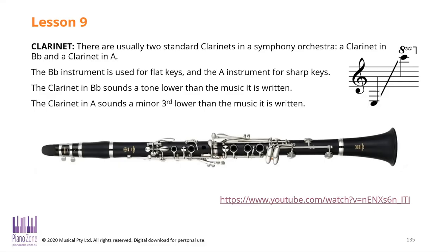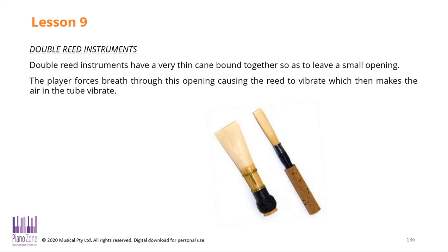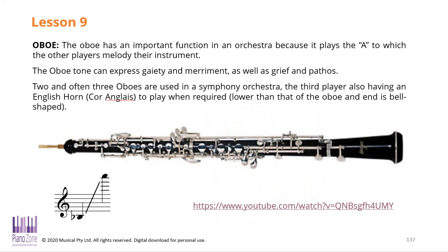I really encourage you to go and watch each of these videos — they're not particularly long, at most 10–15 minutes, but they'll give you a lot of really good information. A double reed instrument has a very thin cane bound on both sides, leaving a very small opening at the top. You have to have really thin lips and quite strong lung capacity to push the air through that very small space. This is an oboe — you can see how small that reed is.